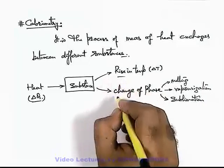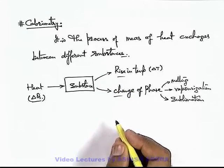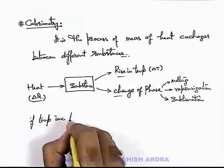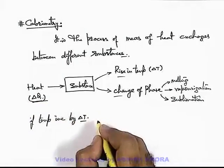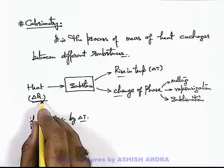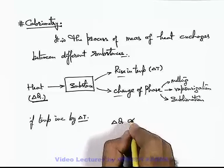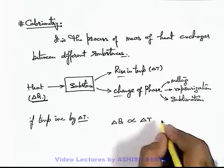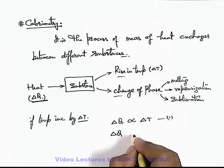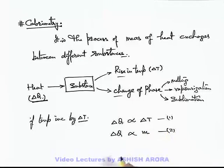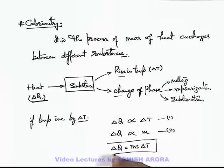Now step by step we'll discuss both of these phenomena in detail with various examples. When we talk about rise in temperature — if temperature increases by delta T on supplying a heat delta Q — in your early classes you already studied that the amount of heat required to raise the temperature of a substance by a given amount is directly proportional to the rise in temperature, and also directly proportional to the mass of the substance. Combining the two, we can state: delta Q = m·s·delta T, where s is a proportionality constant which we call the specific heat of the substance.